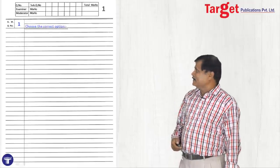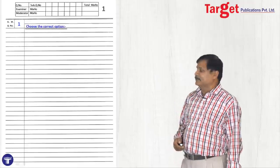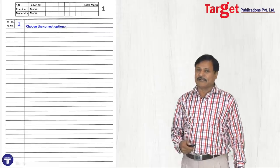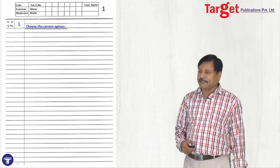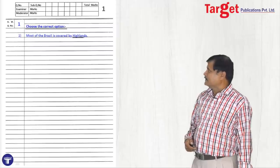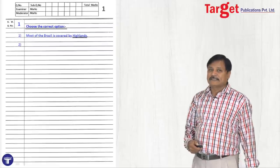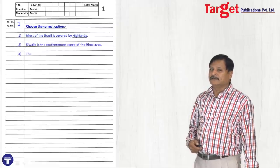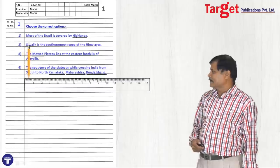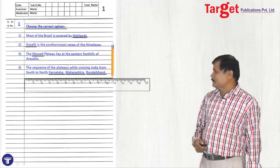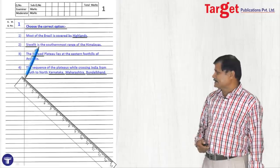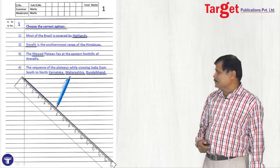Then, write the heading — 'choose the correct option', 'fill in the blanks', or whatever it may be. Now, for the first question — fill in the blanks — answer the first, second, third, fourth, fifth sub-questions. Once done, you have to draw a line, then cancel the unused space.